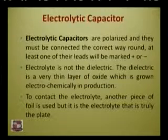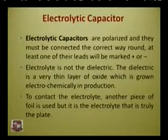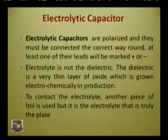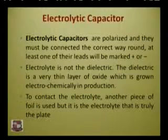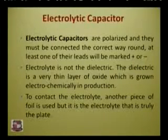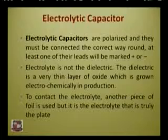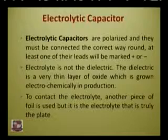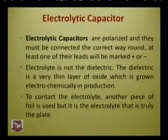Next is the electrolytic capacitor. Electrolytic capacitors are polarized — they have a polarity, plus and minus signs — and must be connected the correct way around. At least one lead will be marked positive or negative. The dielectric is a very thin layer of oxide grown electrochemically in production. To contact the electrolyte, another piece of foil is used, but it is the electrolyte that is truly the plate.